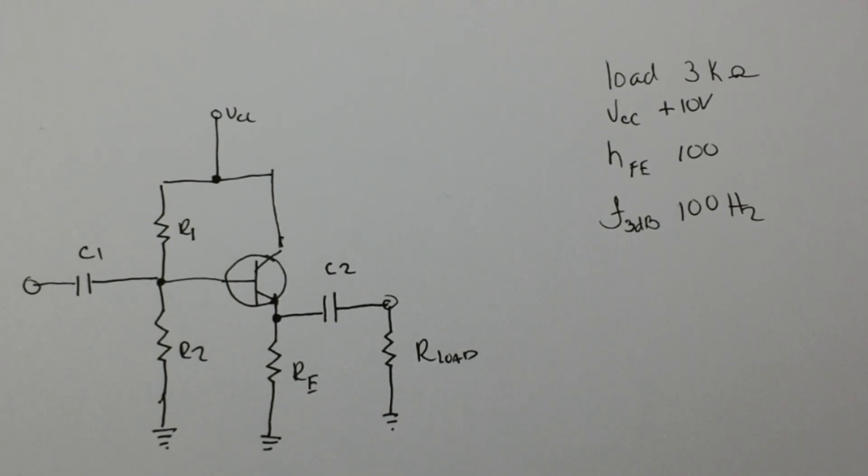In order to start biasing it we need to know what the variables in our circuit are. We know our load and we're going to say in this case it's going to be 3 kilo ohm load. Our VCC is 10 volts, our HFE is 100, and our 3 dB frequency point is going to be 100 Hertz.